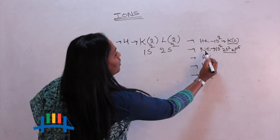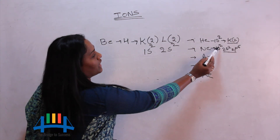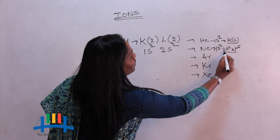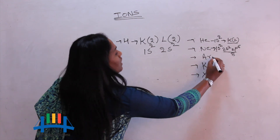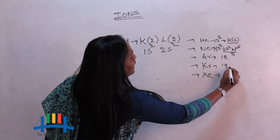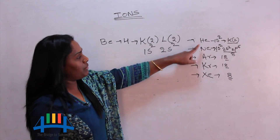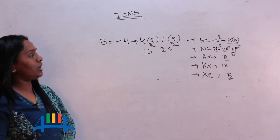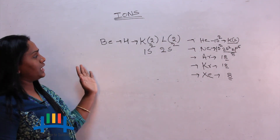According to the 2n² formula, the first shell accommodates only 2 electrons and the second shell carries 8 electrons. For neon, 2s2 2p6 means the second shell is filled with 8 electrons. Similarly, argon has 18 and krypton has 18 electrons in their outermost shells. All noble gases end with 8 electrons in their outermost shell, making them very stable elements.